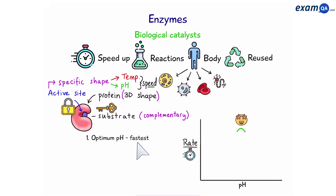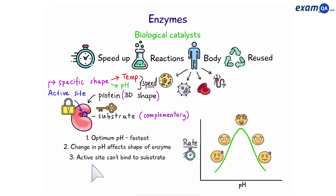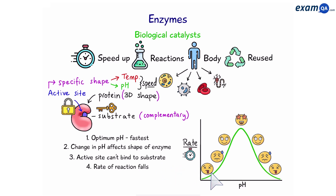If we begin to increase or decrease the pH in both directions, the speed starts to slow down, because changes in pH will affect the shape of the enzyme. If we keep on increasing or decreasing the pH, the shape will have changed so much that the active site can no longer bind to the substrate. Eventually no substrates will be able to bind and the rate of reaction falls to zero — so the enzyme has been denatured.